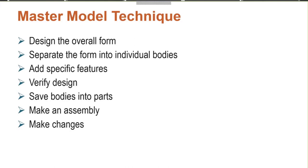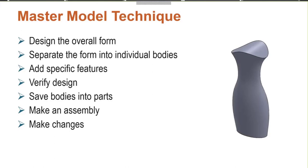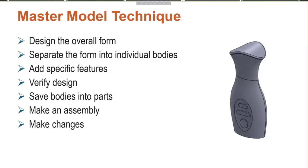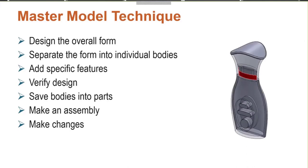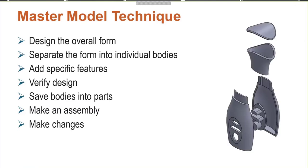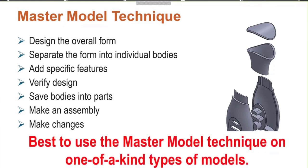For the master model, we can start with a set of surfaces or any form — be it organic or prismatic — this technique works for all. In our demo, we're going to design the overall form, break it up into separate bodies, add specific features to the individual bodies, verify the design, save those bodies out as individual components, and create an assembly. The beauty of the master model technique is the parent-child relationship between the master model and the individual child components — any changes made to the master propagate to the child components, speeding up the design process. It's best used on one-of-a-kind unique designs, not your standard parts library.